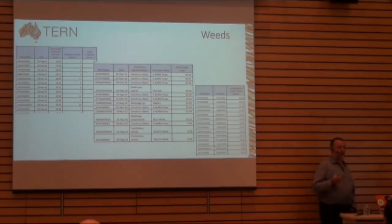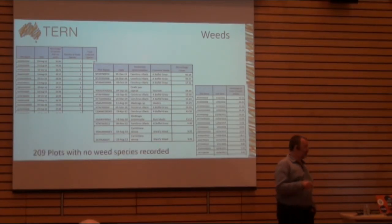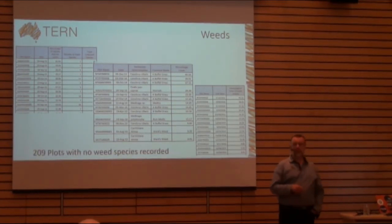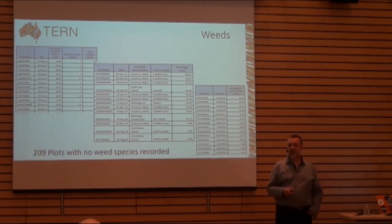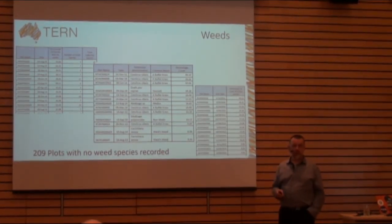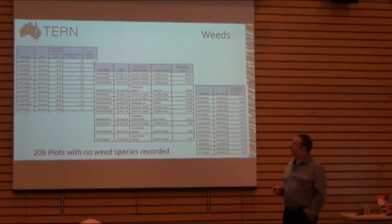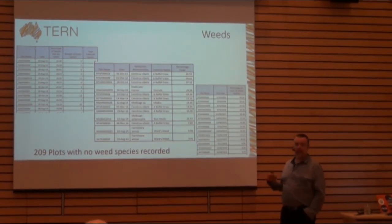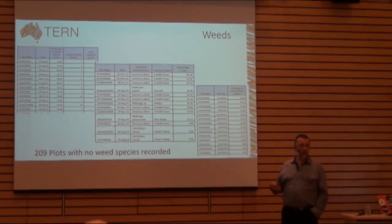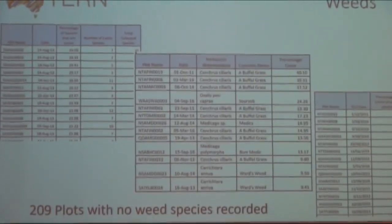Out of our data, we've started to do analysis on what kinds of weeds occur and in which plots. Interestingly, two-fifths of our plots have no weed species recorded in them, which is quite exciting. It also enables us to find out what species are where, and more importantly, track that through time as we do revisits.